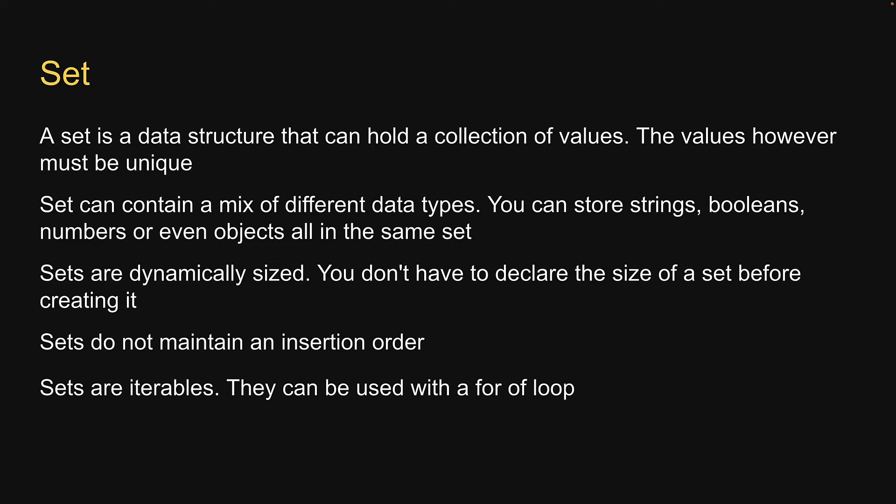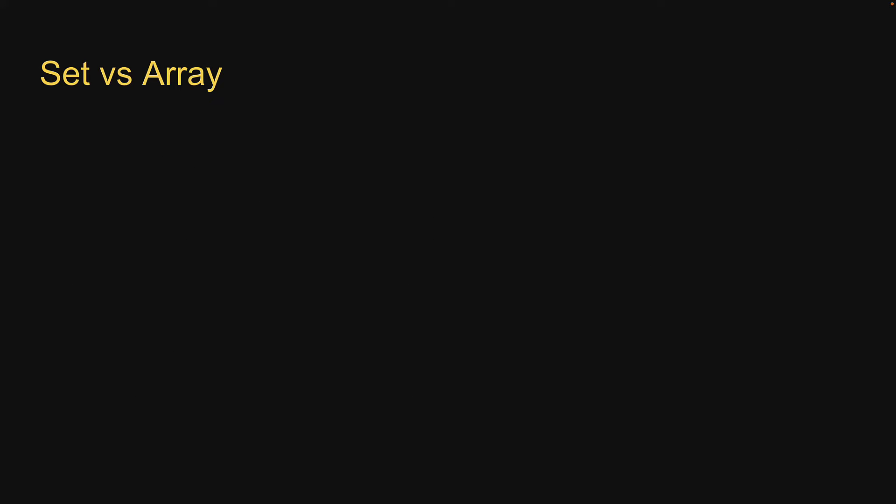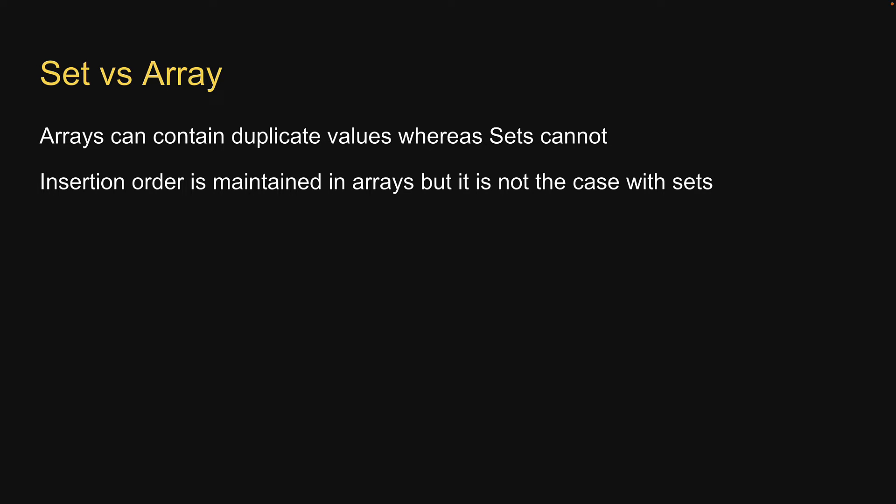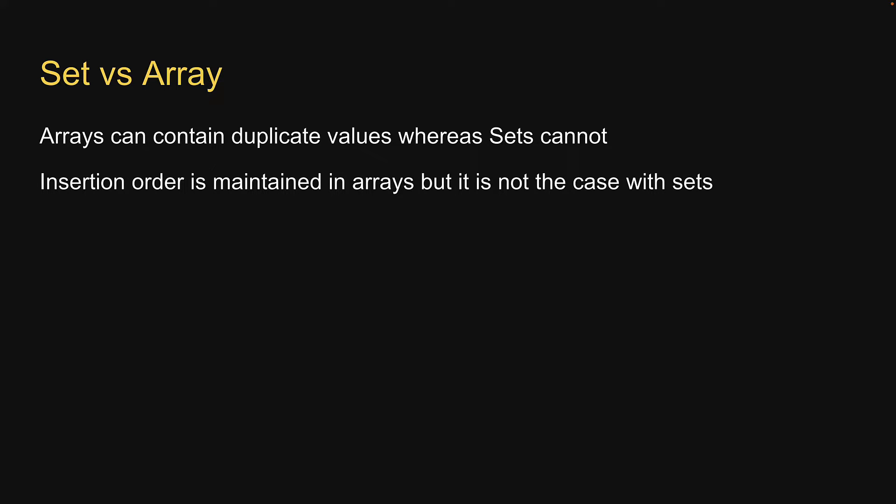Now a lot of these characteristics are similar to arrays, so let's zoom in on the differences. First, arrays can contain duplicate values whereas sets cannot. Second, insertion order is maintained in arrays but it is not the case with sets. Finally, searching and deleting an element in a set is faster when compared to arrays.